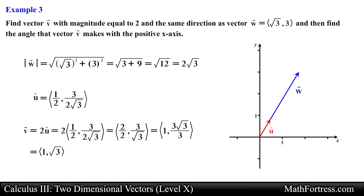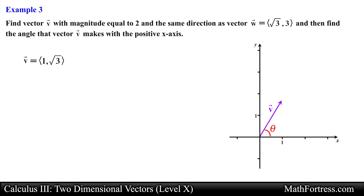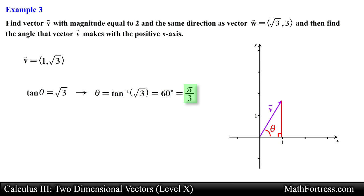Simplifying gives x and y components of 1 and the square root of 3 respectively. To find the angle vector V makes with the x-axis, we use the components to form a right triangle and apply trigonometry — solving for theta by computing the inverse tangent of the square root of 3, which equals 60 degrees or pi over 3 radians.